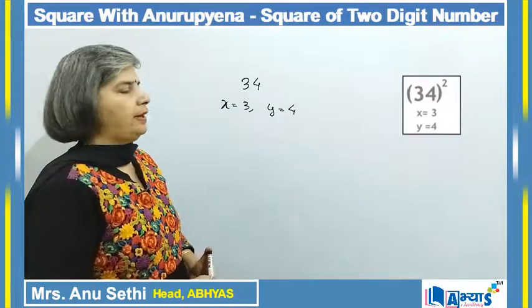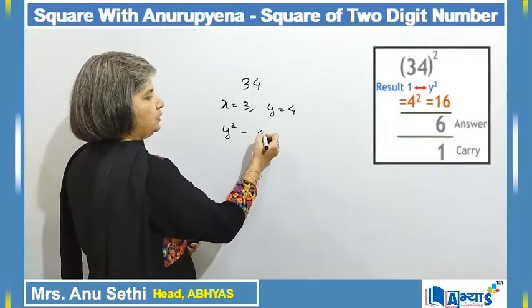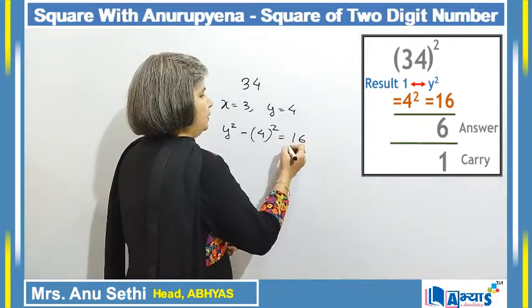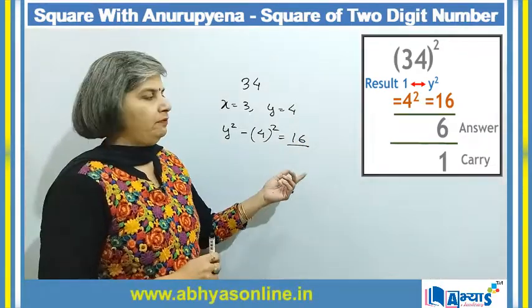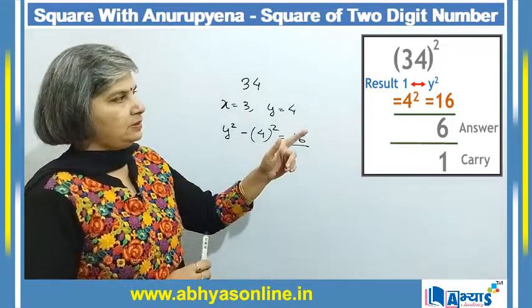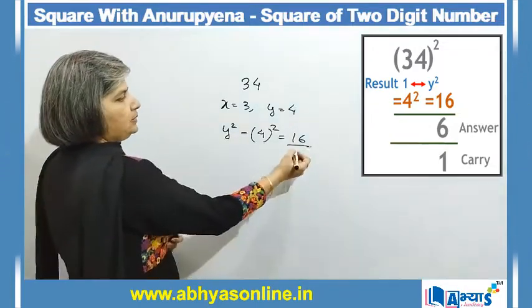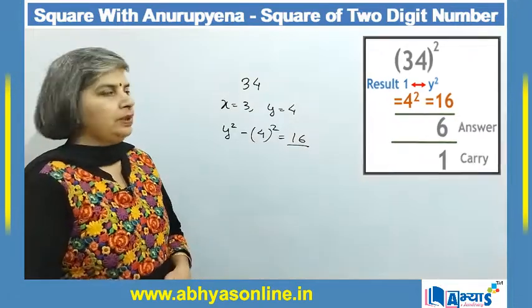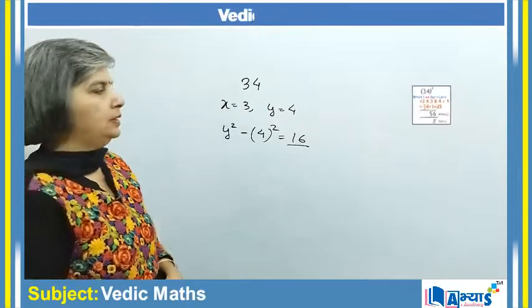The next step is to find y squared. Since y is 4, the square of 4 is 16. Because 16 is a two-digit number, I take the digit at the unit place — which is 6 — and prefix it in the answer. The 1 is considered as carry.